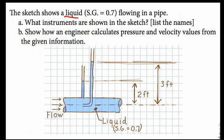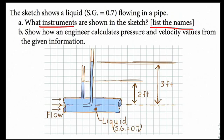This problem involves a liquid with a specific gravity of 0.7 flowing in a pipe. Goal one is to identify the instruments — we're told to list the names. Goal two is to show how an engineer calculates pressure and velocity from the given information.